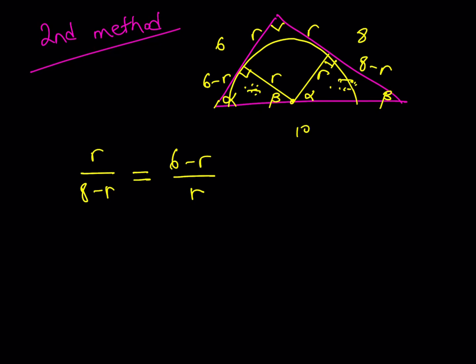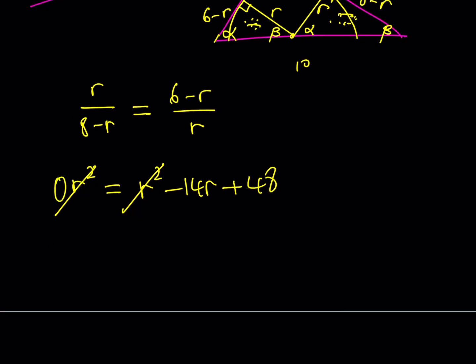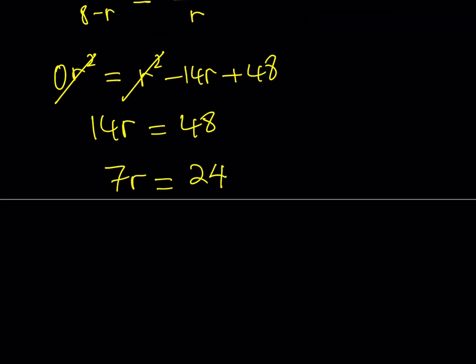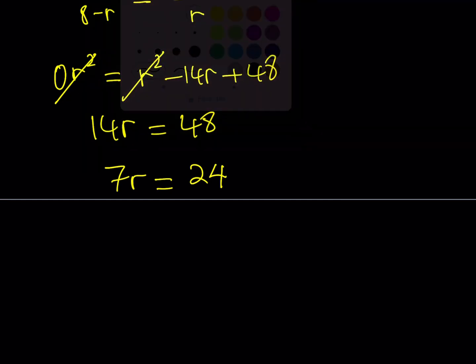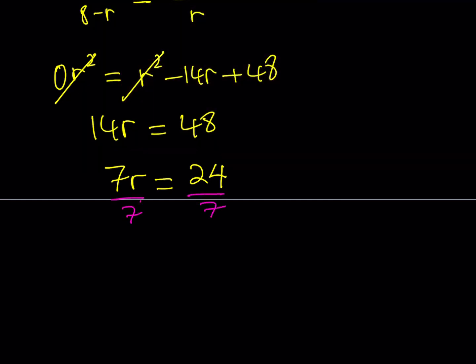I just need to solve this. Let's cross multiply. r² = (8-r)(6-r), which gives r² - 14r + 48. r² cancels out and you end up with zero. Nice. So now we get 14r. If you add 14r to both sides, you get 14r = 48. And obviously, both sides you can divide by 2. And this should give you 7r = 24. And in an effort to find r, basically, if you go ahead and divide both sides by 7, you should be getting r = 24/7.